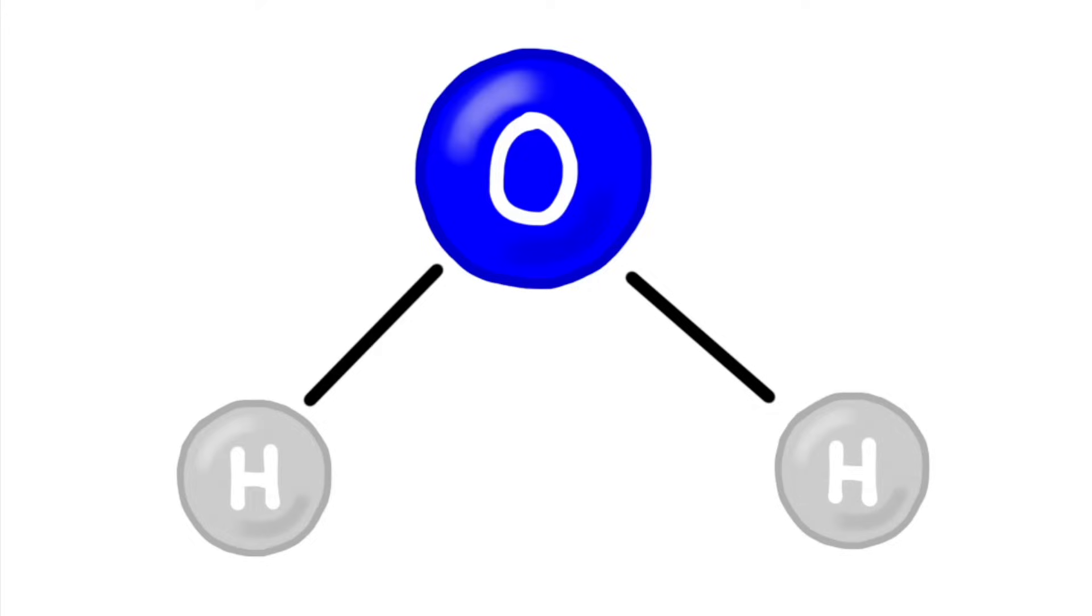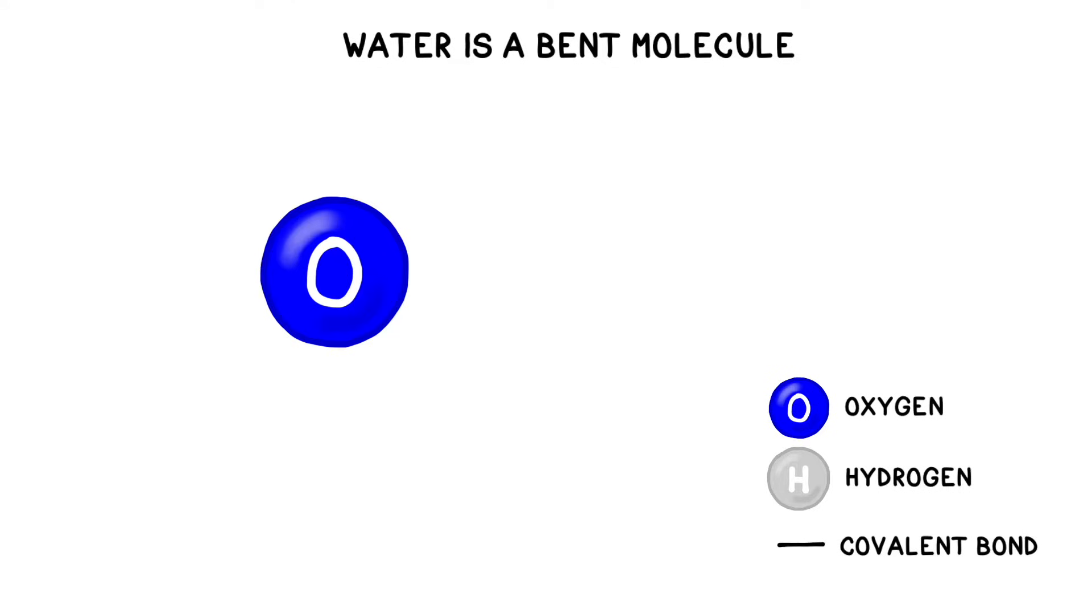All of these properties are related, and it begins with the structure of the water molecule itself. The water molecule is shaped like the letter V, with an oxygen atom in the center and two hydrogens joined to it by single covalent bonds.